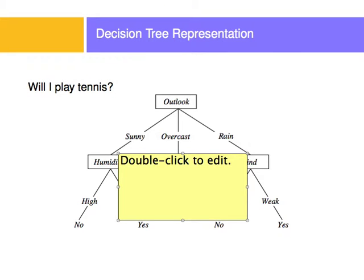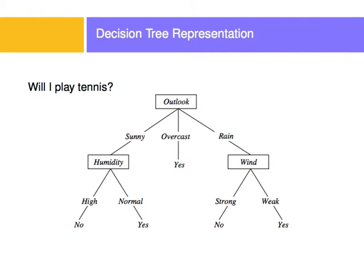I'm going to talk a little bit about decision trees. Decision trees are basically a set of decisions that, based on asking subsequent questions, we can answer a problem.